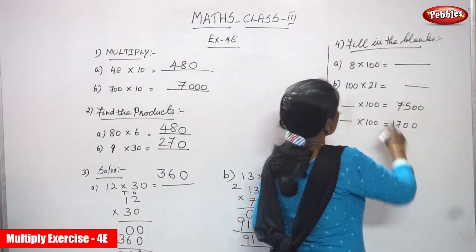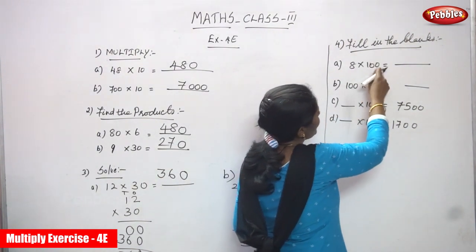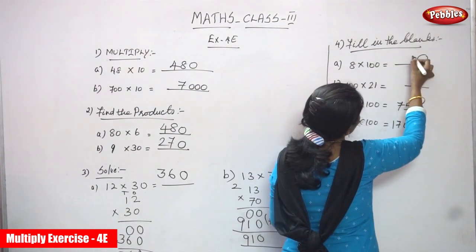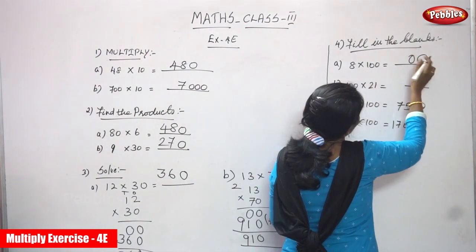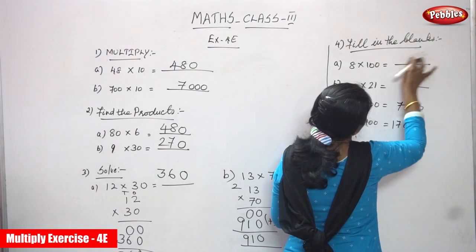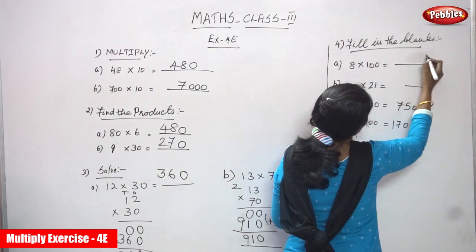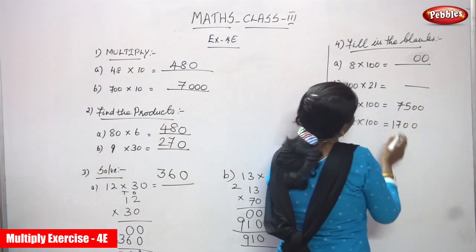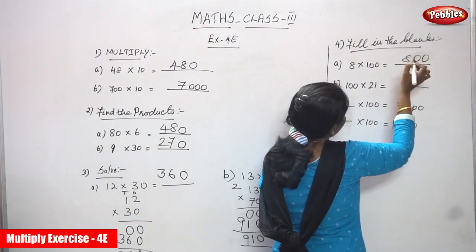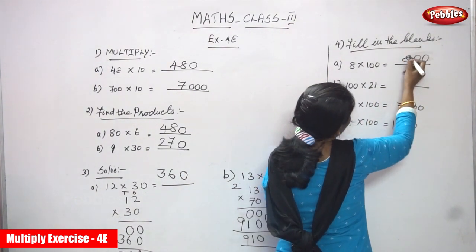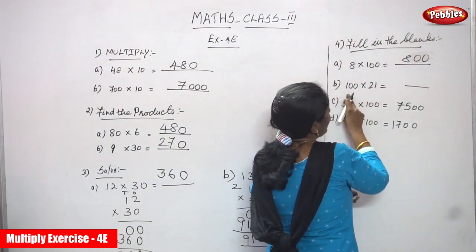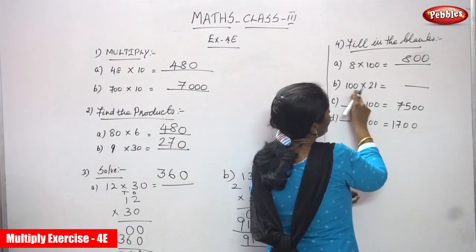Now we are going to see the fill-in-the-blanks. 8 into 100 — how many zeros in 100? Two zeros. So write two zeros at the end. The remaining number: 1 into 8 is 8. The answer is 800.